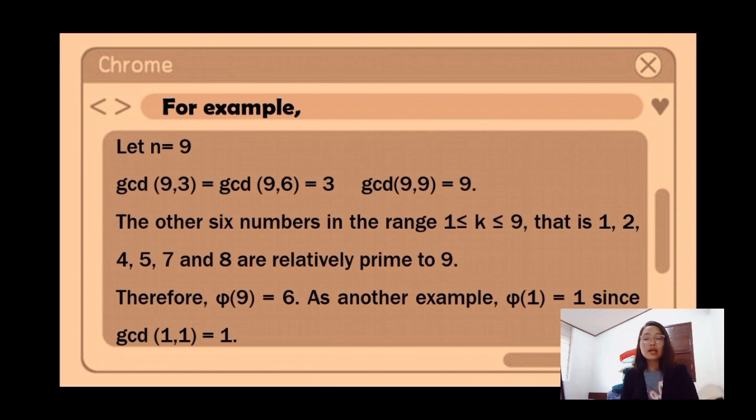As another example, phi(1) = 1, since gcd(1, 1) = 1.